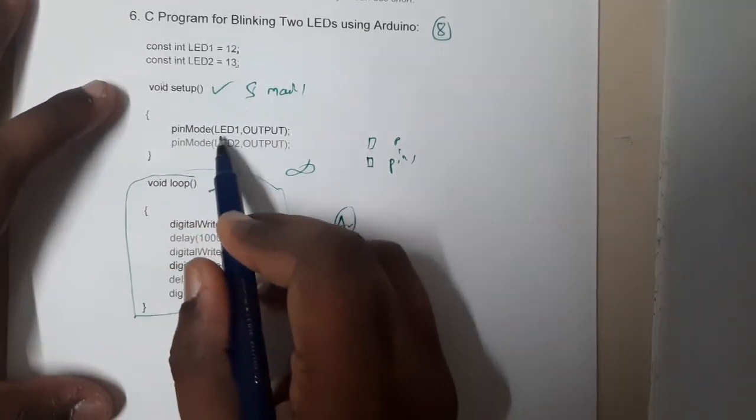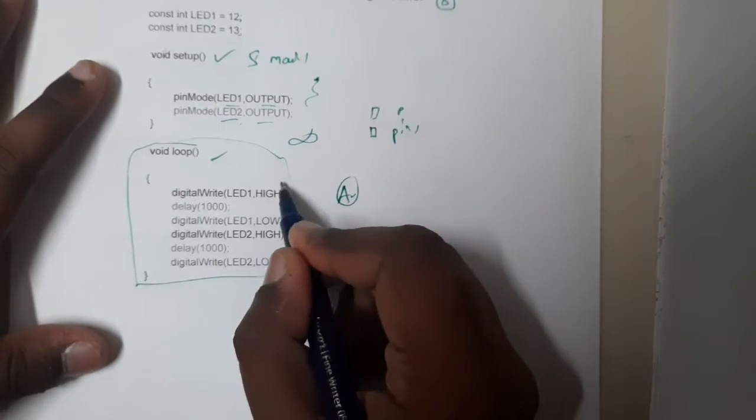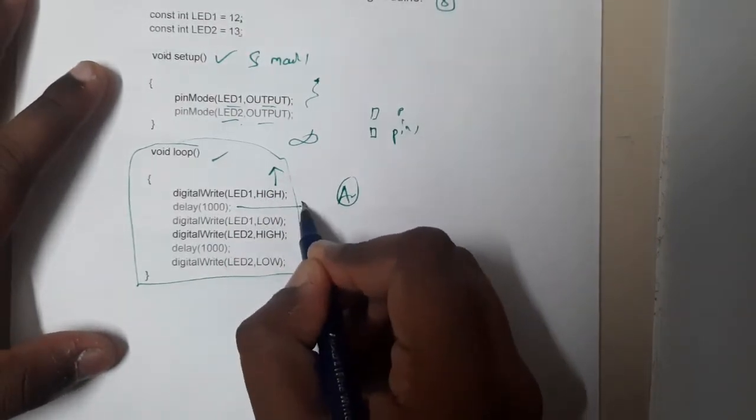Basically they are giving the outputs of light. Similarly, here we are making the first LED high and we are waiting for one second. It will be in milliseconds.